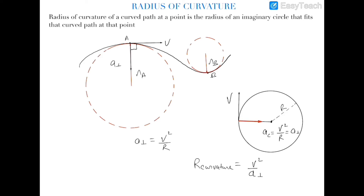Because circular motion is also an instantaneously curved motion, we can compare it with circular motion. This is the basic formula for the radius of curvature and the basic definition of the radius of curvature. In the next video, we will discuss the general formula for calculating the radius of curvature.